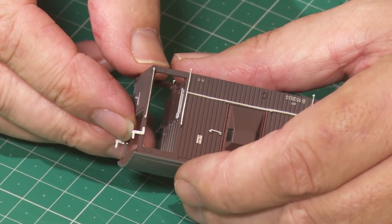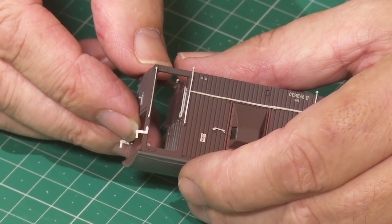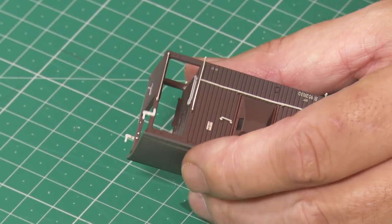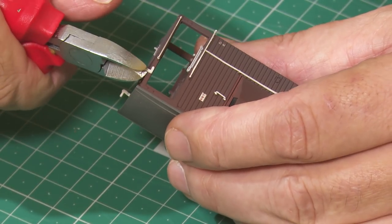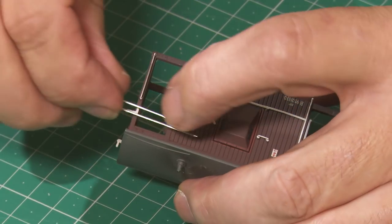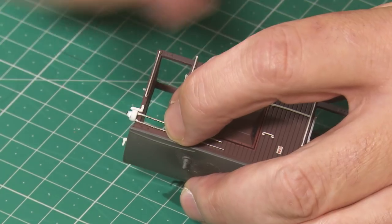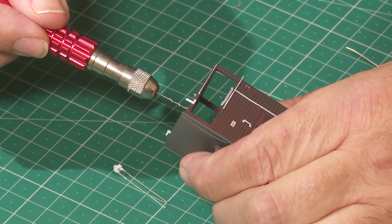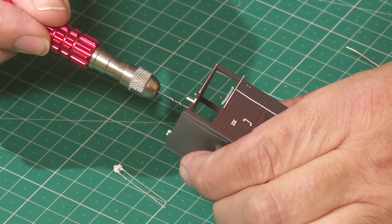Then moving to the lamp irons we snip away the top section of the top lamp irons. Then offering up the LED we can see how it sits.